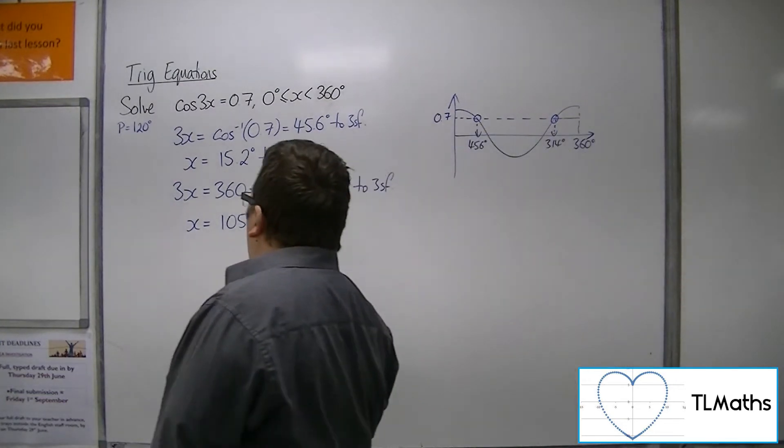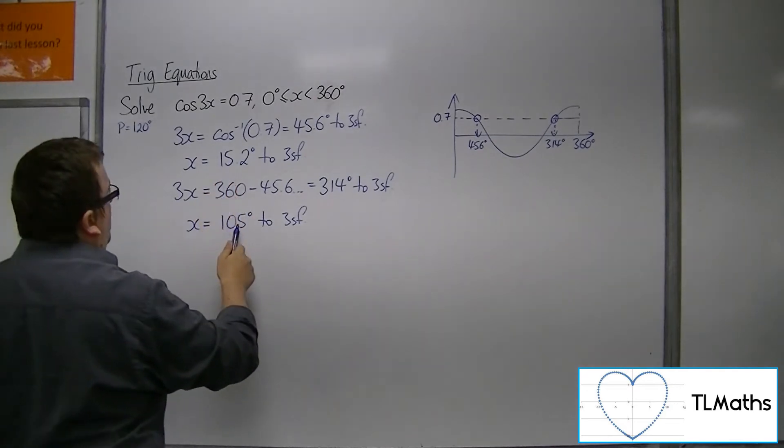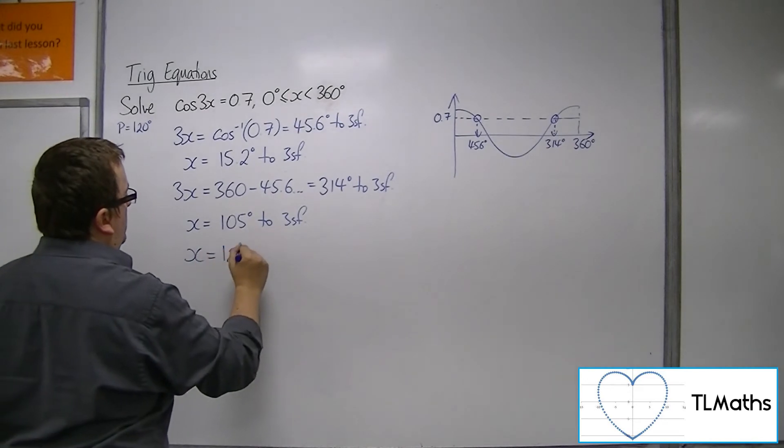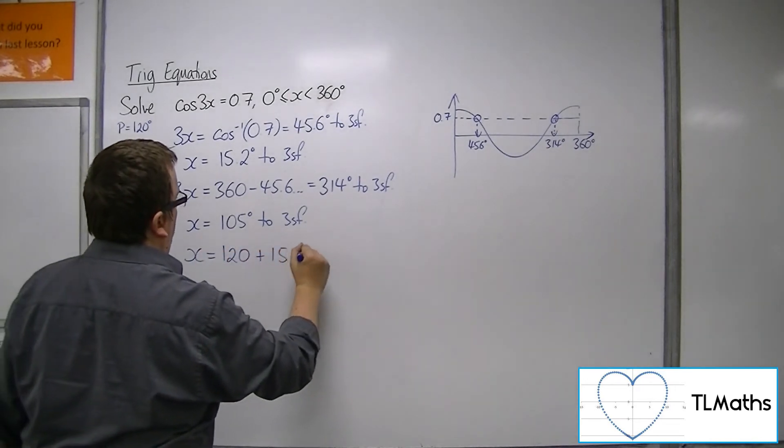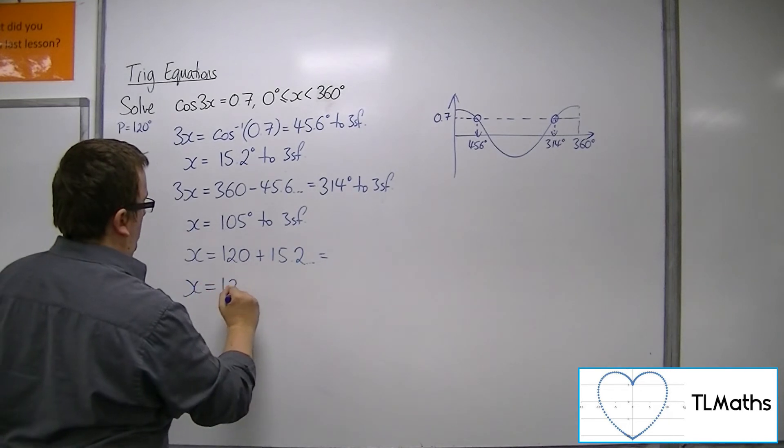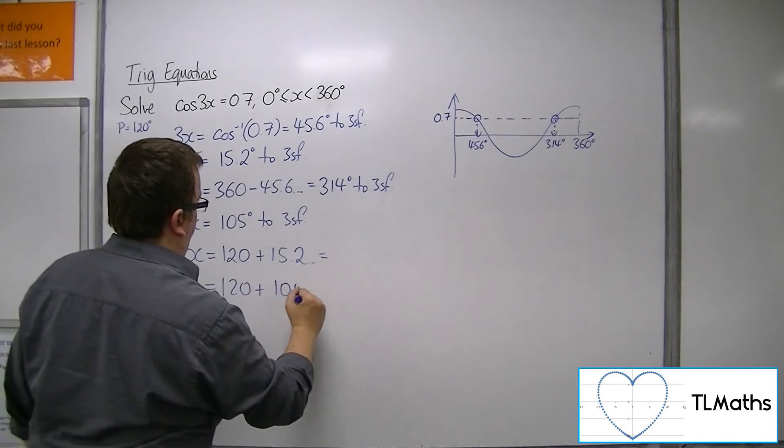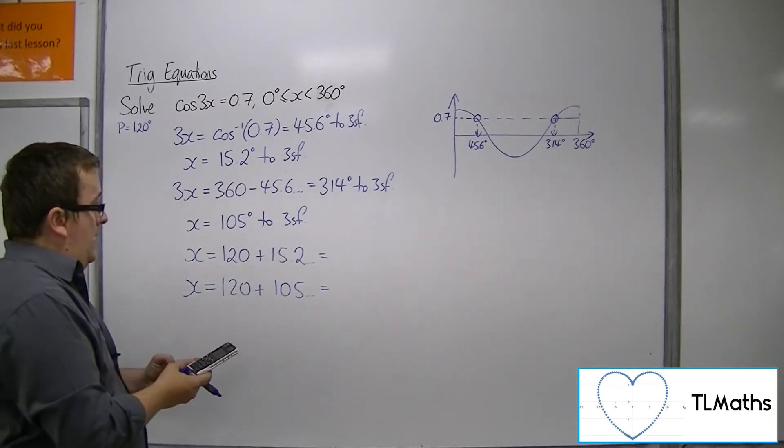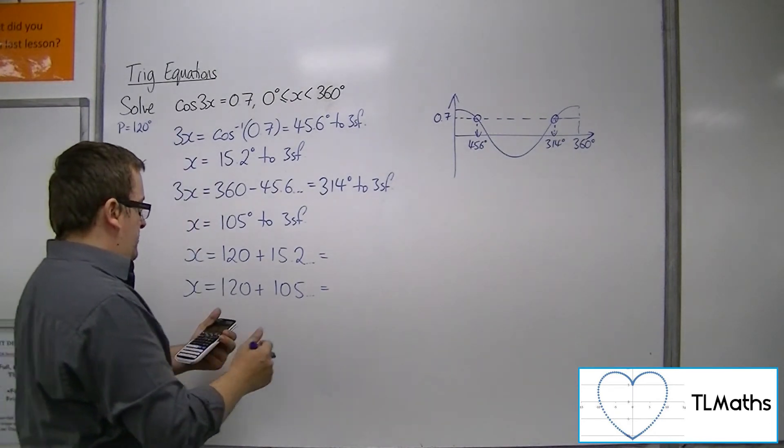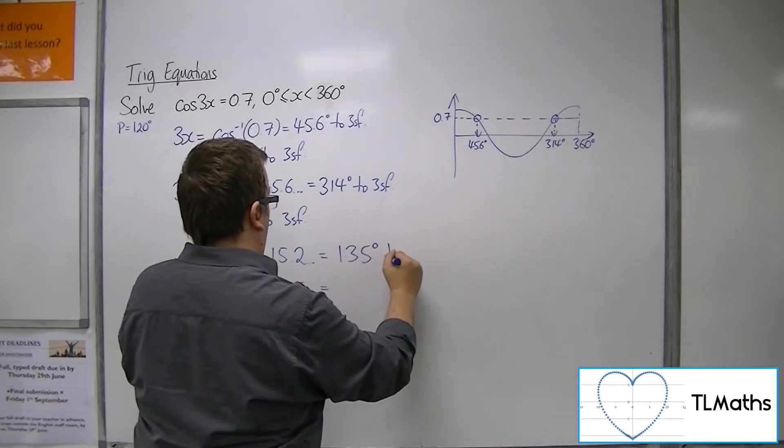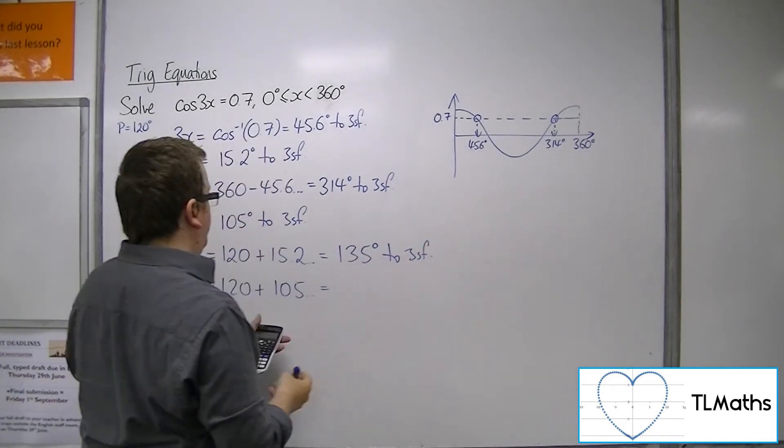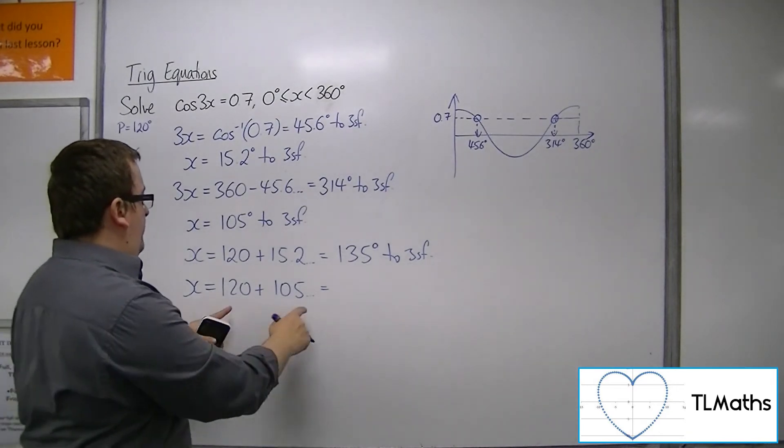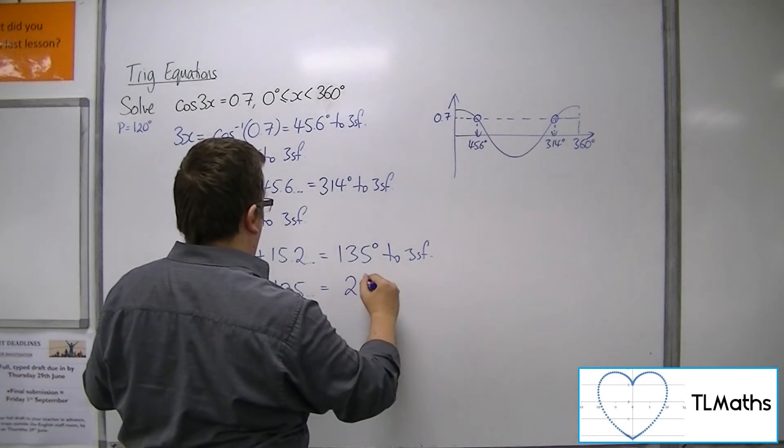So what I'm going to do is I'm going to add on the period of the function onto both of those solutions to get two more. Okay, so we've got 135 for that one. And for this one we'll have 225.